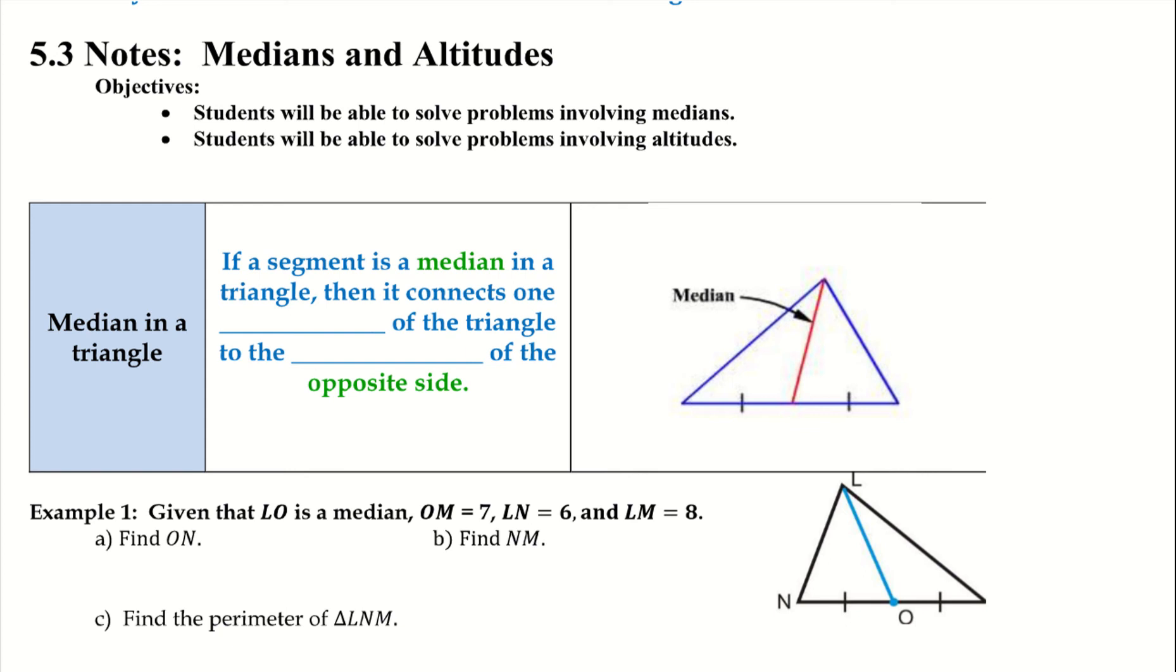Let's start with a median in a triangle. If a segment is a median in a triangle then it connects one vertex of the triangle to the middle of the opposite side. As we can see, it's connecting here at the vertex and it goes all the way down to exactly center of the opposite side to create two different congruent parts. Remember that's what little dashes mean, that those two parts are congruent to one another.